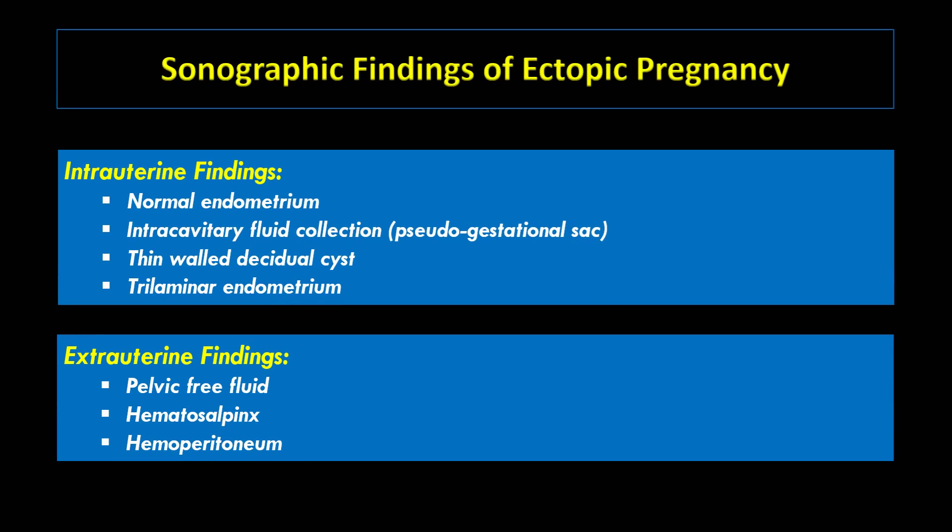The sonographic features of ectopic pregnancy are divided into intrauterine findings and extrauterine findings. The intrauterine findings include normal endometrium, intracavitary fluid collection, what is called pseudo-gestational sac, thin-walled decidual cysts, and trilaminar endometrium. The extrauterine findings include pelvic free fluid collection, hematosalpinx, and hemoperitoneum.